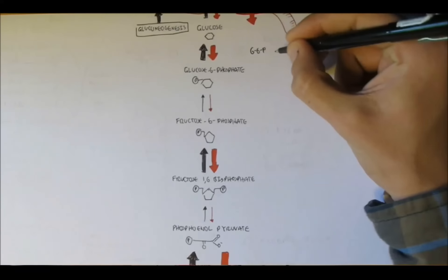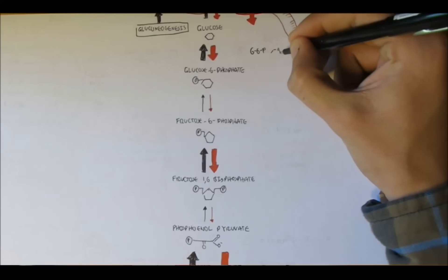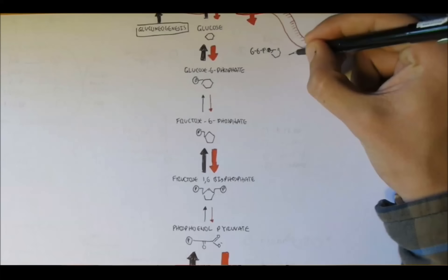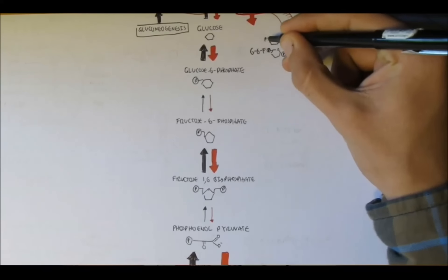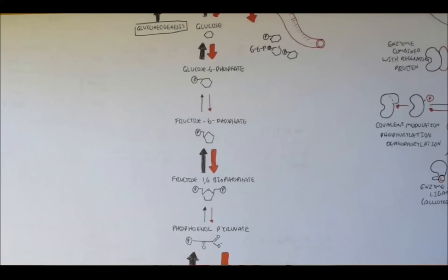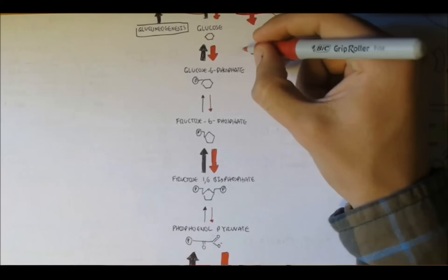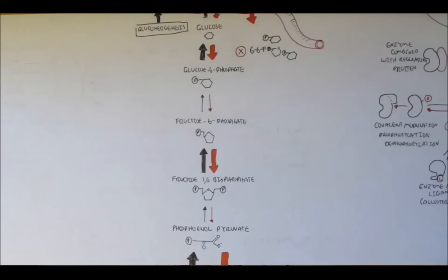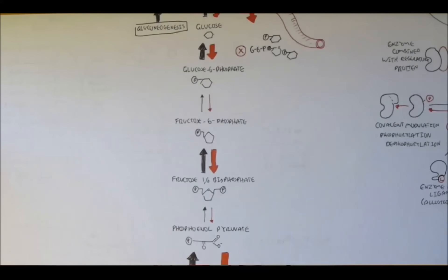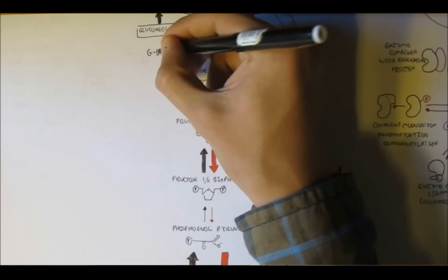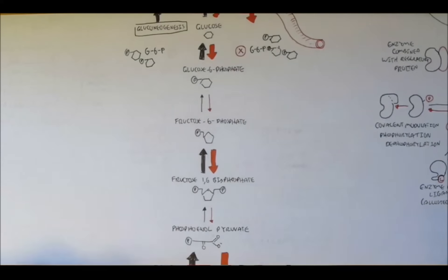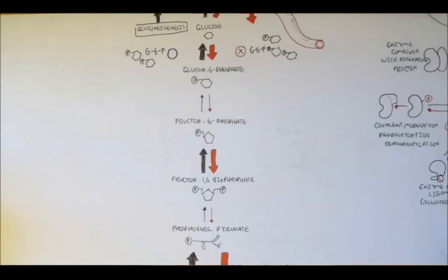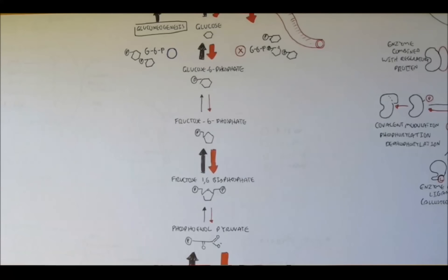The molecules or factors that control these reactions control the enzymes in these different reactions. The first irreversible reaction is from glucose to glucose-6-phosphate. High amounts of glucose-6-phosphate will inhibit hexokinase, which converts glucose to glucose-6-phosphate, therefore inhibiting glycolysis — because you don't want to make more of what you already have. Similarly, if there are high amounts of glucose-6-phosphate, it will actually stimulate glucose-6-phosphatase, and so stimulate gluconeogenesis.